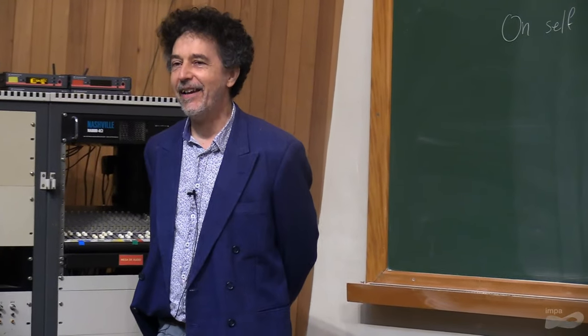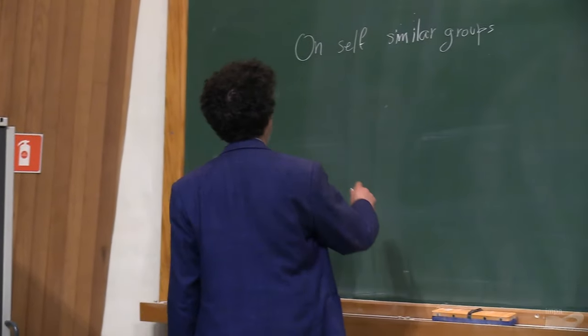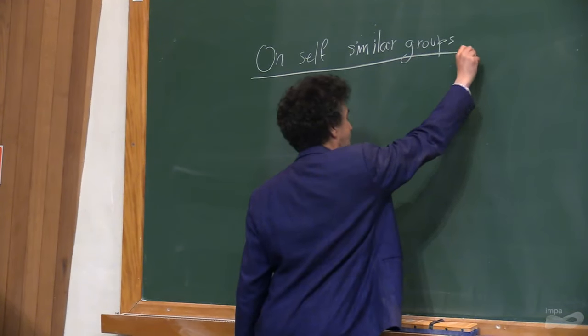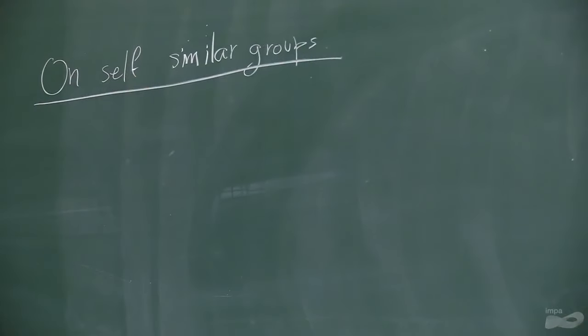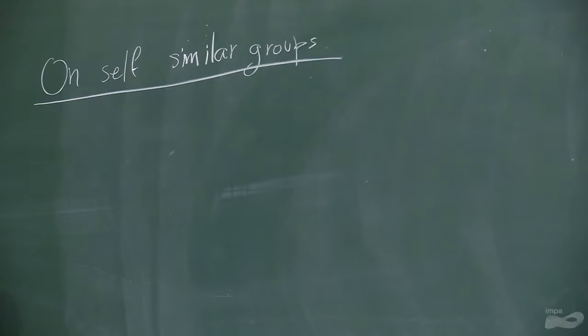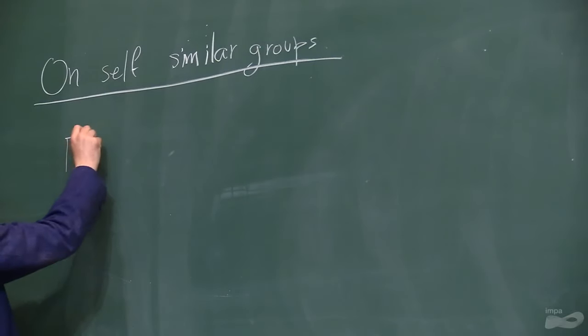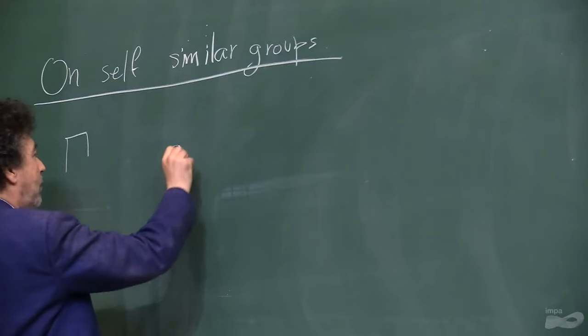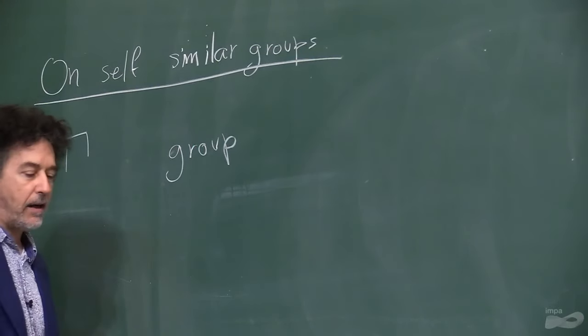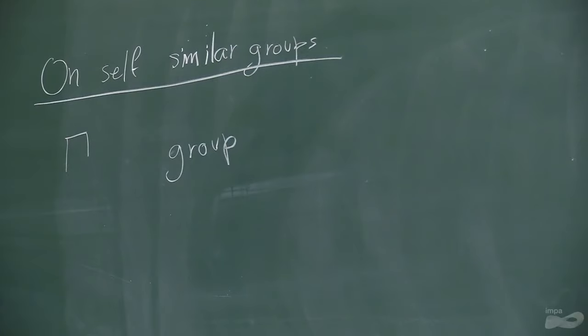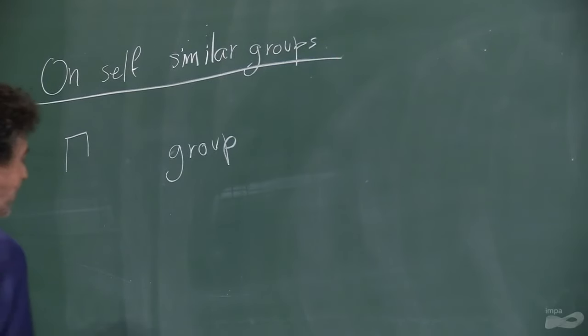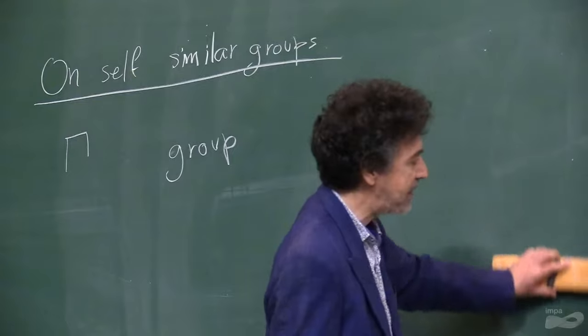Thank you very much. It's even a greater pleasure to be here, and I thank all organizers. Today I'd like to speak on self-similar groups. So first, I will explain the definition. Let gamma be a group — here it is a group without topology, it's a discrete group, and typically it's a finitely generated discrete group. And I would like to say what is a self-similar action.